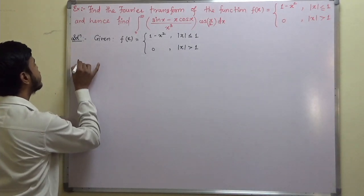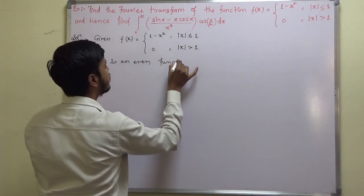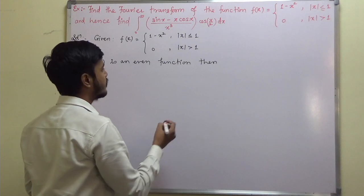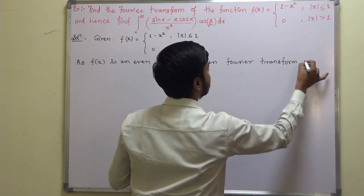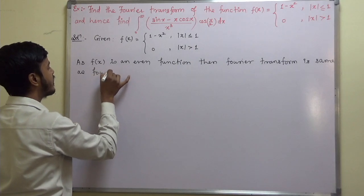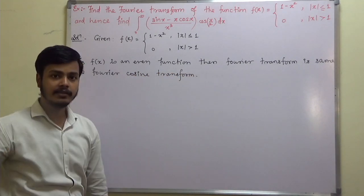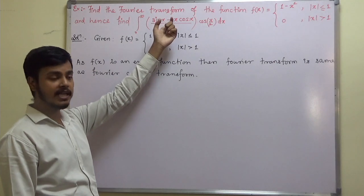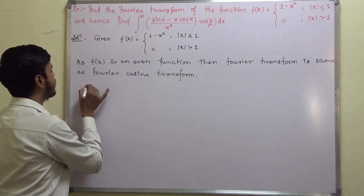Since f(x) is an even function, the Fourier transform is the same as the Fourier cosine transform. We have the function f(x) and we have to find its Fourier transform — to be precise, the Fourier cosine transform, because the function is even. So let us start with the Fourier cosine transform.